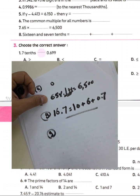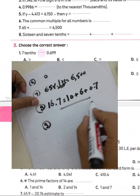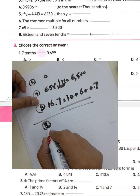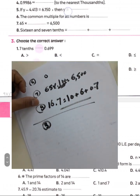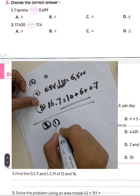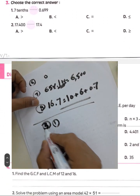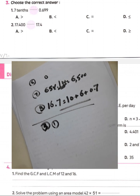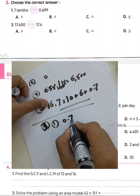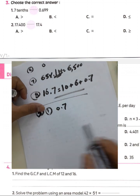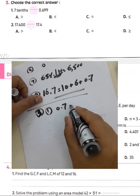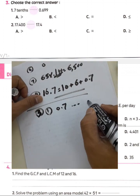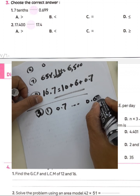Question number three, choose the correct answer. Question number one: seven tenths is written as 0.7, or is it greater than 0.69?